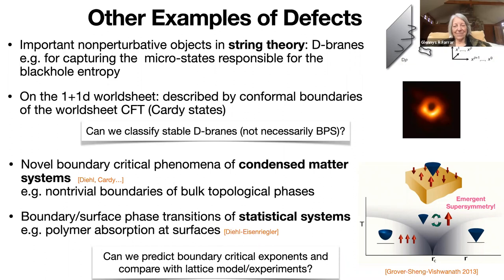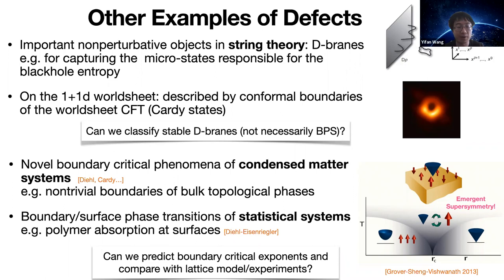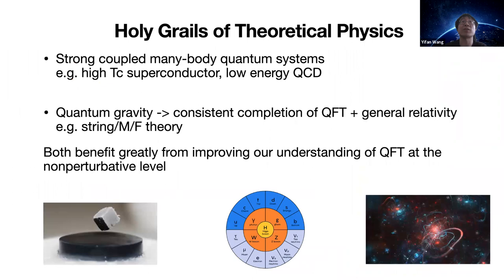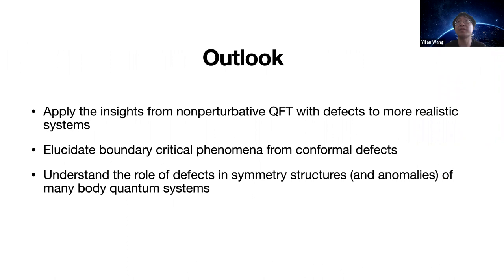An audience member asks whether defects always have an interpretation as generalized global symmetries with anomalies to track. The answer is that symmetries in general quantum theory can be generalized — a symmetry defines a topological defect, which is a very special kind of defect among those discussed. These topological defects encode information about the symmetry and its anomalies, but they are a corner of the full defect algebra. This subsector, as a subalgebra, also constrains the rest of the defects. This is partly the point of the final future direction mentioned.